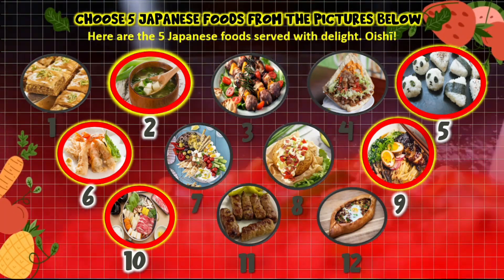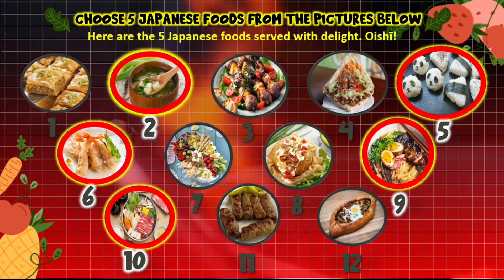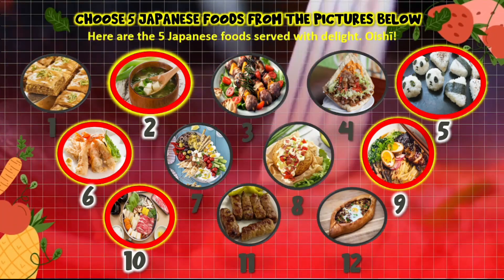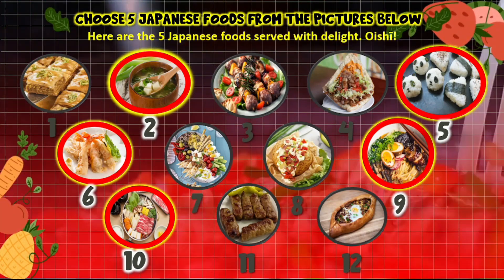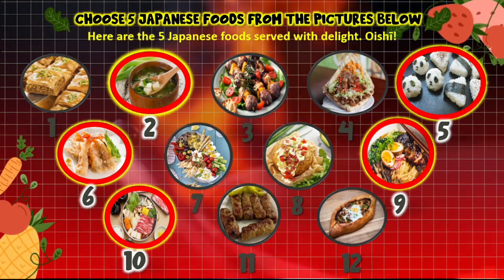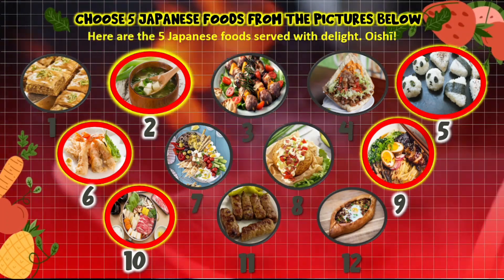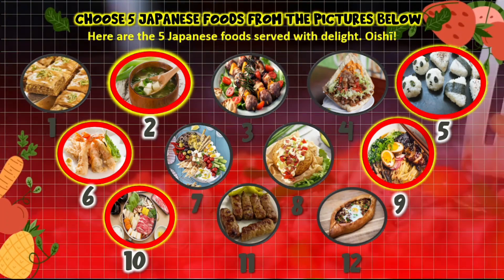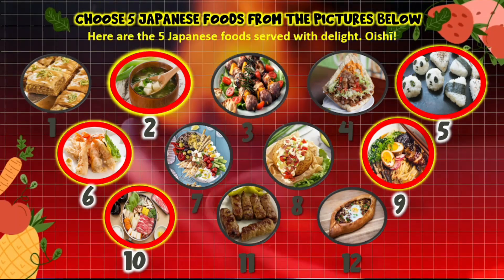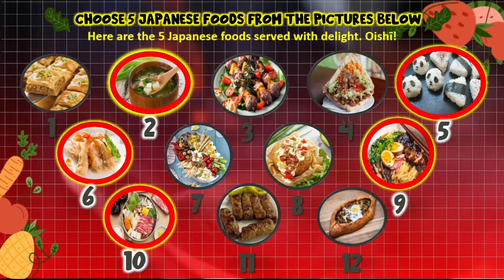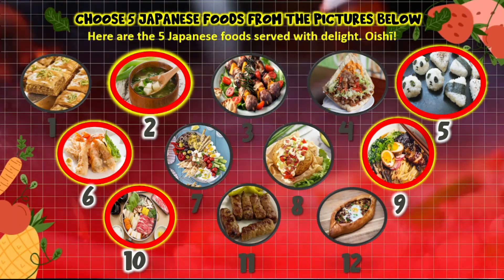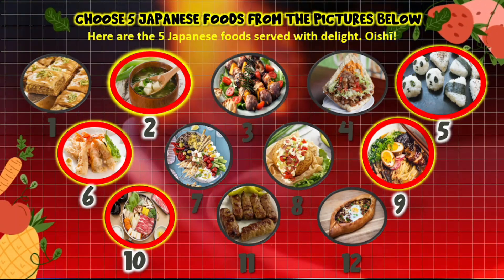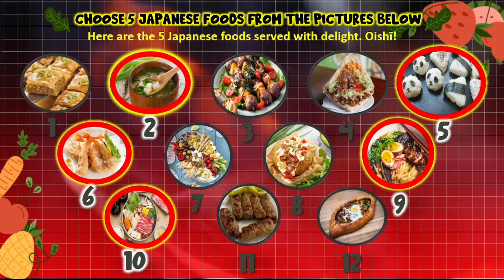Food number 2 is a Japanese food called Miso Soup. Food number 5 is another Japanese food called Onigiri. Food number 6 is one of my favorite Japanese foods when I was a kid — it's called Tempura. Food number 9 is what I ate last month; it's a very popular Japanese food called Ramen. And food number 10 is another Japanese food called Shabu Shabu.